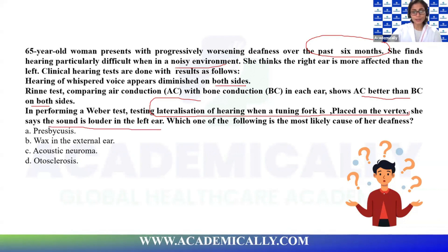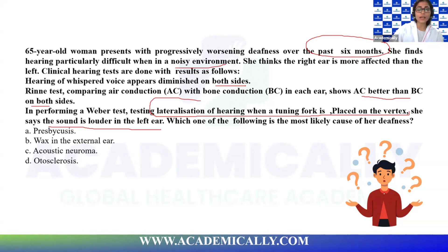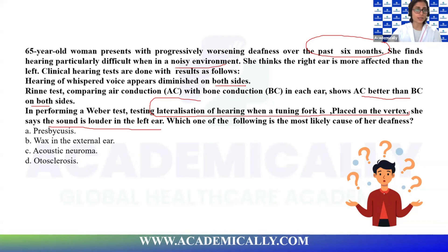On Weber's test, the tuning fork lateralizes towards the left ear — she feels the sound is better in the left ear. What is the most likely cause of her deafness? In these questions, you first need to determine whether it is conductive or sensorineural hearing loss based on the history and tuning fork results, then identify the cause — whether presbycusis, wax, acoustic neuroma, or otosclerosis.